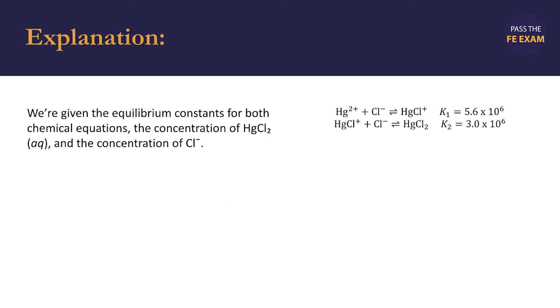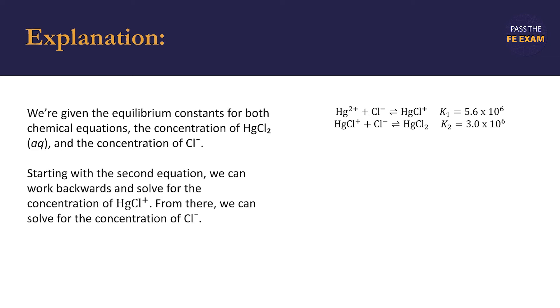We're given the equilibrium constants for both chemical equations, K1 and K2, as well as the concentration of aqueous mercury 2 chloride and the concentration of the chloride anions. Looking at the information that we have, we should realize that we need to work our way backwards and start with the second equation so that we can solve for the concentration of HgCl+.